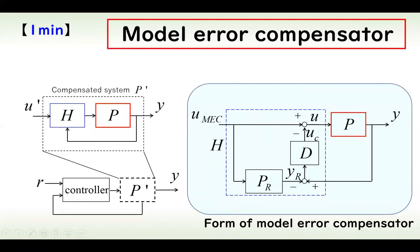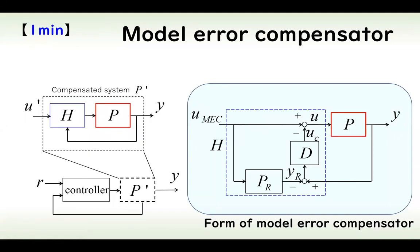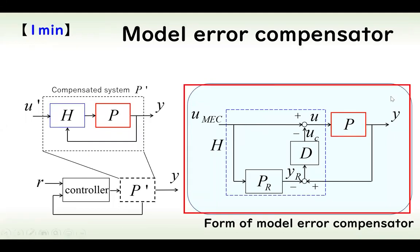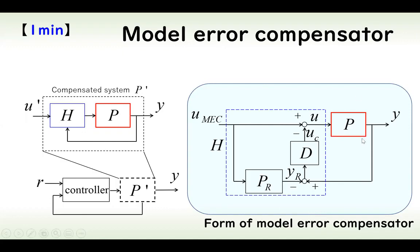A model error compensator uses P as the plant and PR as the plant model. By using this filter, the input-output relation can be made similar to the plant model, increasing robustness. In many cases, D is given as a high-gain filter.